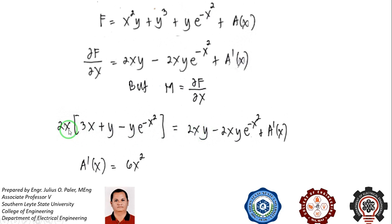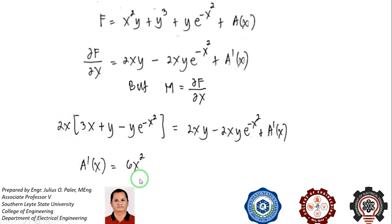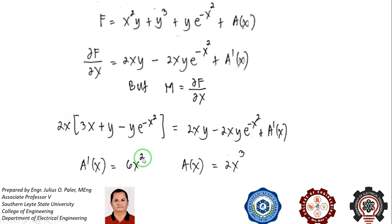The 2xy terms cancel, and 2x times y e to the negative x squared, which is 2xy e to the negative x squared, also cancels. What remains is 6x squared equals a prime of x. Integrating this to solve for a of x, the integral of 6x squared dx is 6x cubed over 3, which gives us 2x cubed.